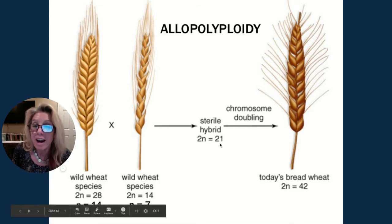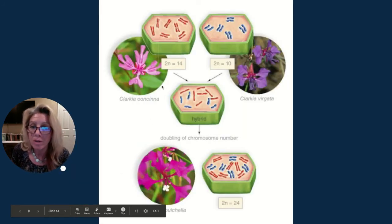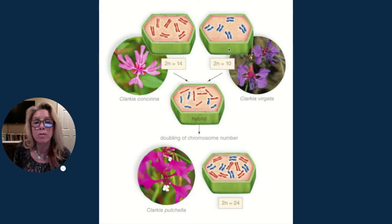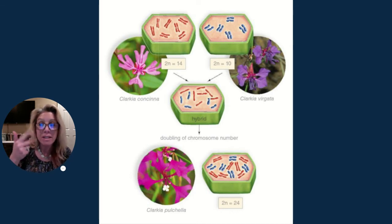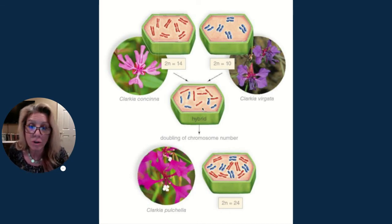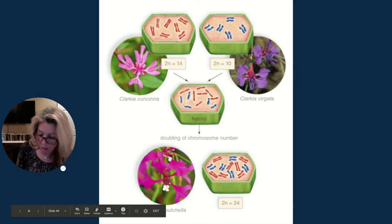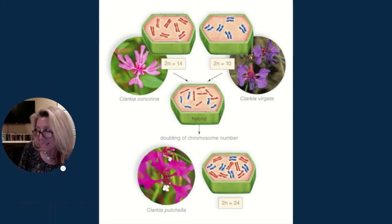Today's bread wheat is a hybridization followed by a doubling, giving a diploid number of 42. Another example: the Clarkia concinna has a diploid number of 14 and gametes of 7; Clarkia virgata has diploid number 10 and gametes of 5. A hybrid would be sterile with 12 chromosomes, but a doubling of chromosomes produces Clarkia pulchella with a diploid number of 24. Allopolyploidy: two different but related species hybridize, then chromosomes double.